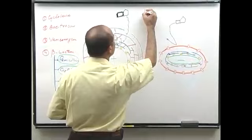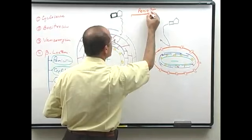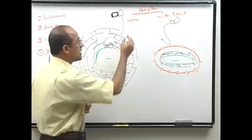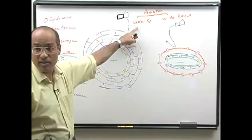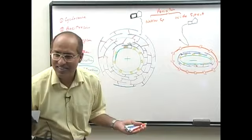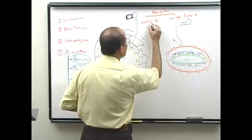Penicillin G is a very bulky molecule. Because it is bulky, it can go through the porous peptidoglycan of gram positive and reach the target. But penicillin G cannot effectively pass through the porins of gram negative, so it is not very effective there because it cannot reach the target protein.